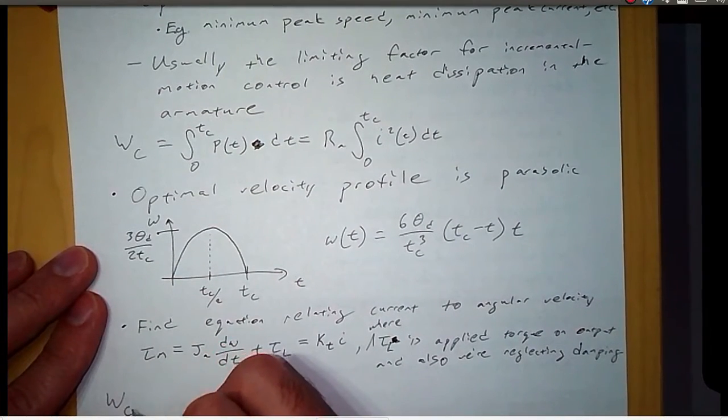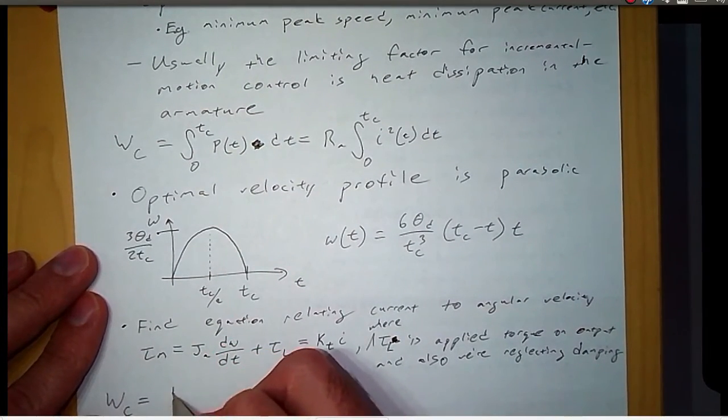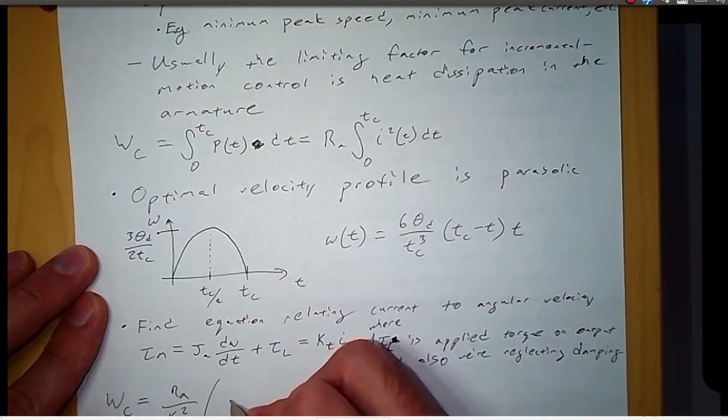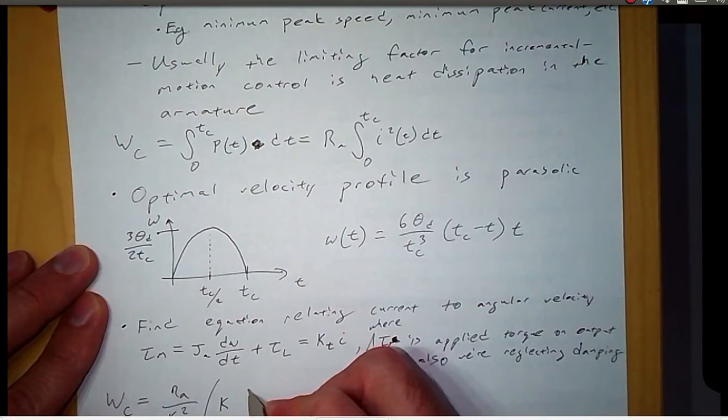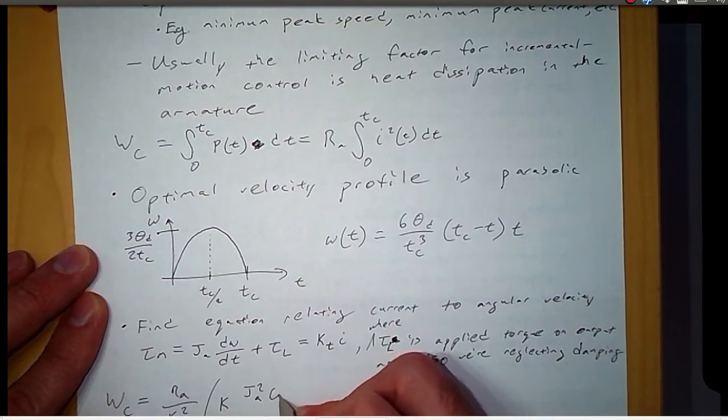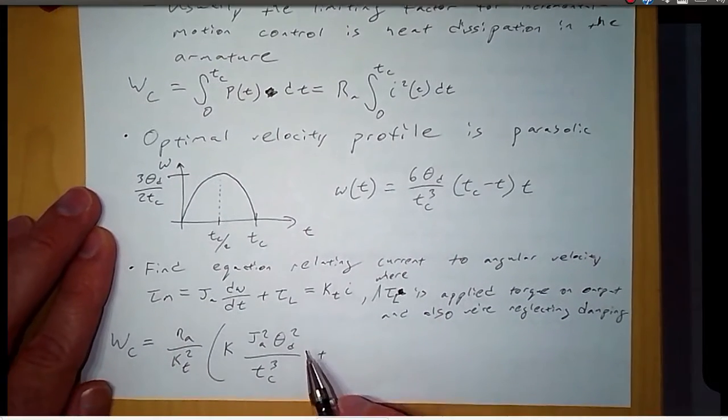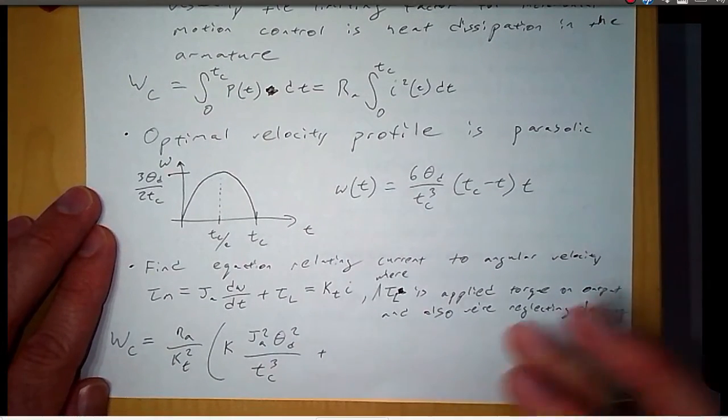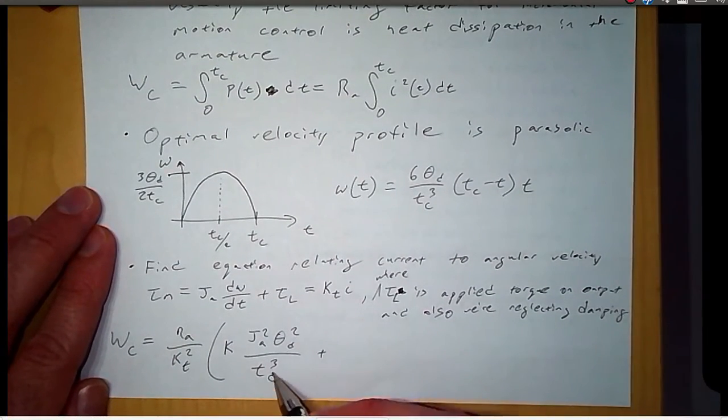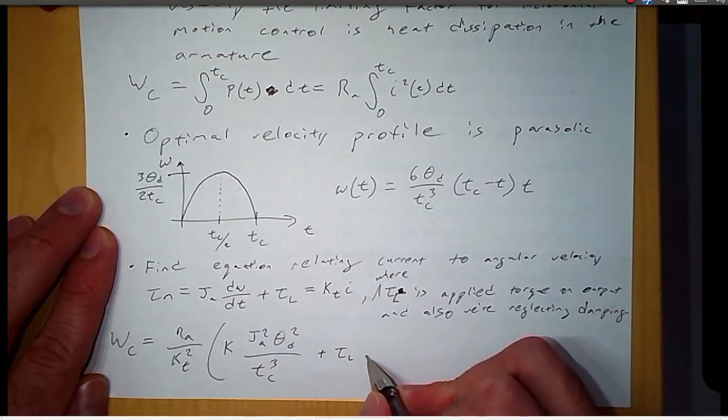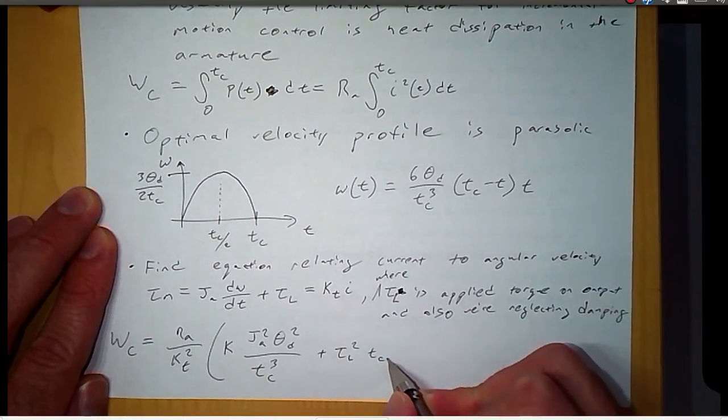So what we get if we make these substitutions and solve for the heat dissipated or the energy is that WC is equal to R A over torque constant squared times K, which is a new variable. So times these constants. We've got the moment of inertia, the desired position, and the time that we're given to complete the move.